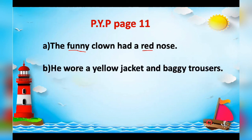Number two: 'He wore a yellow jacket and baggy trousers.' The word 'yellow' describes the color of the jacket, so it is an adjective — underline it. The word 'baggy' describes what kind of trousers he was wearing, so 'baggy' is also an adjective — underline it.